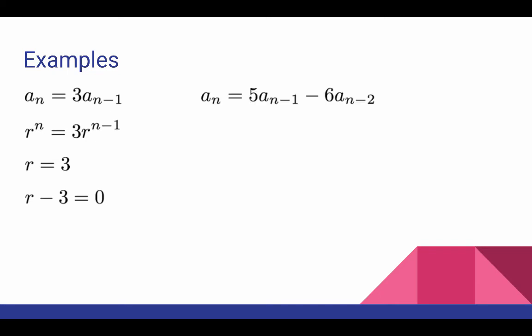The second example here is a linear homogeneous second order recurrence relation. Substitute the r to the nth power formula in for the recurrence relation, then simplify, and then get this equal to zero. The quadratic you see here is the characteristic equation for the second order recurrence relation.